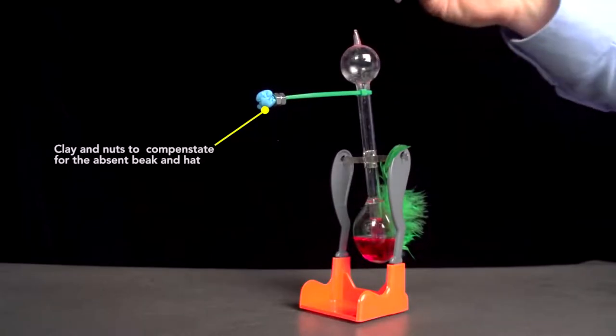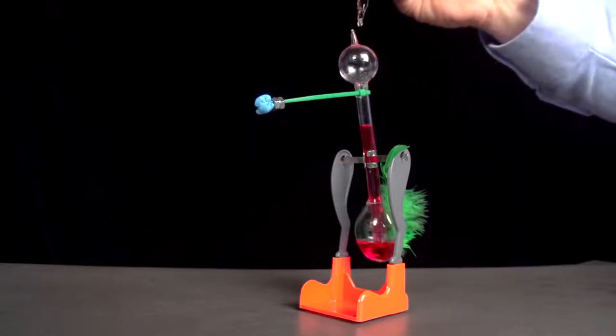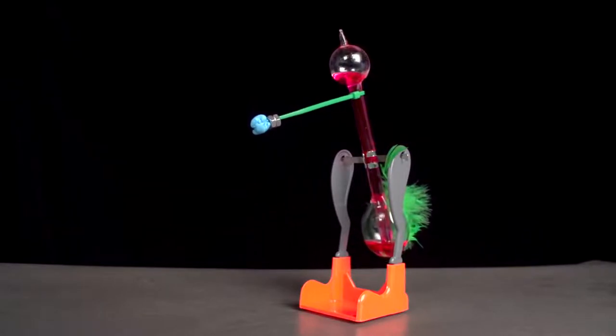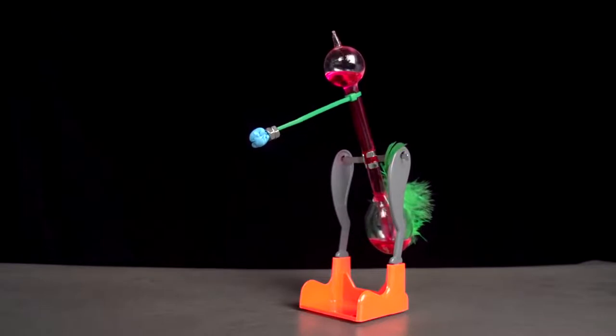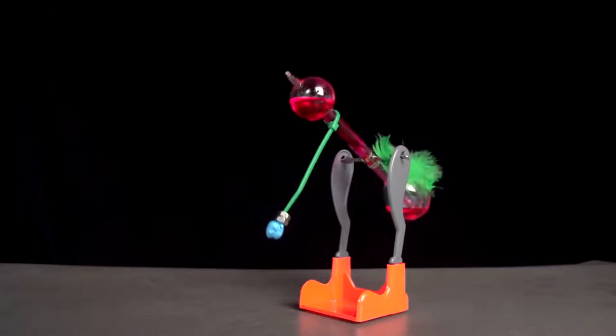Now watch as I put a few drops of isopropyl alcohol on the top bulb to cool it. The liquid rapidly rises to the head. This changes the bird's center of gravity so that it will tilt forward. The head now fills with liquid, and then it drinks.